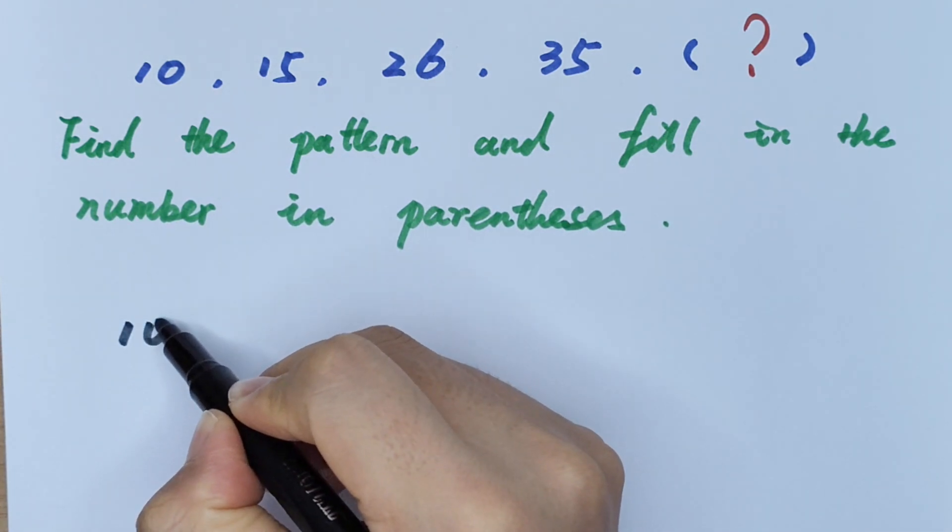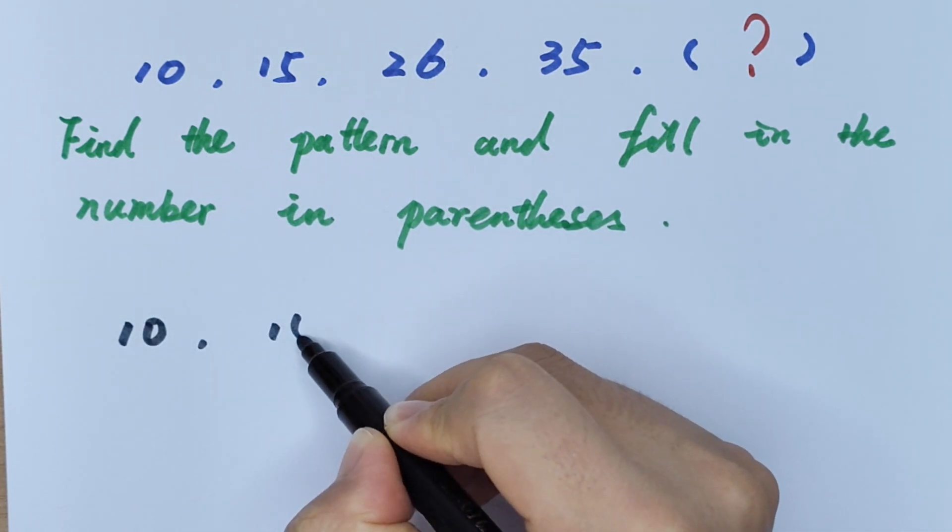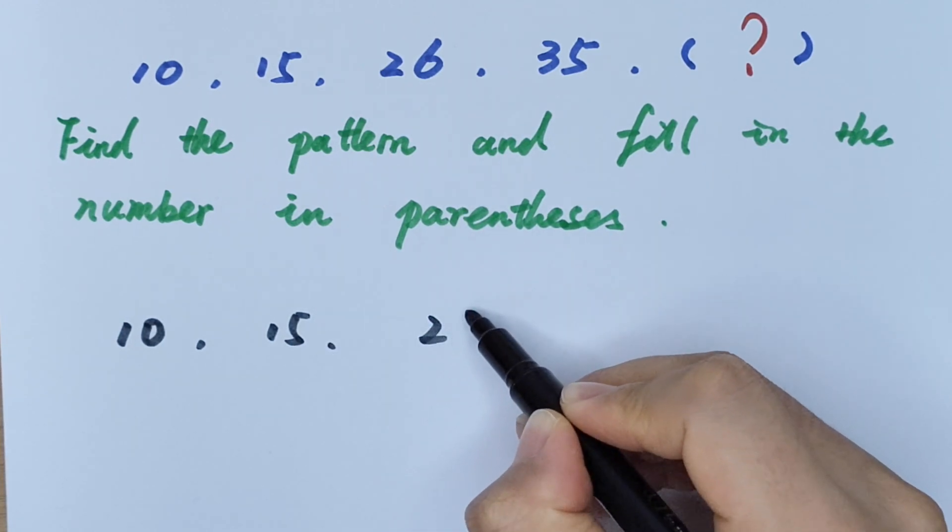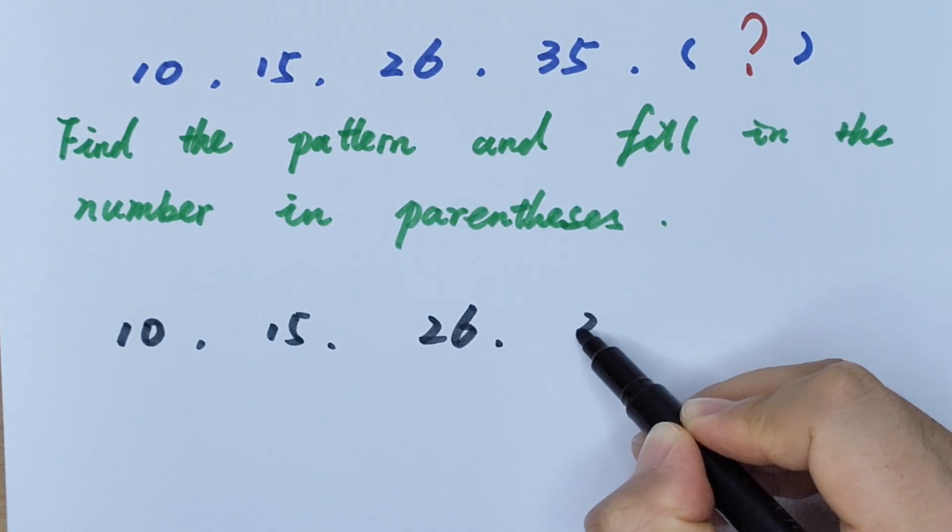However, addition count from the rule and so can multiplication. Okay, 10, 15, 26, 35.